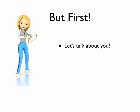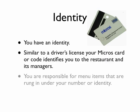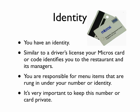First, let's talk about you — and what I mean by this is you have an identity within the system. Similar to a driver's license, your Micros card, or if you're using a four-digit code, identifies you to the restaurant and its managers. It identifies you to the back of the house as well as the bar, so they know where drinks are going and who ordered them. Because of this, you are responsible for menu items that are rung in under your number or identity, so it's very important to keep this number or card on you at all times.